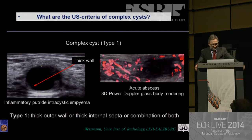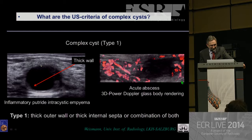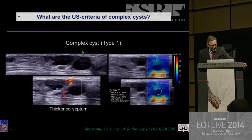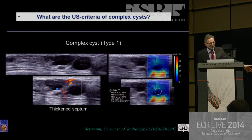A complex cyst Type 1: you see a thickened wall. In this situation, the arrow indicates the thickened wall — this is an inflammatory intracystic empyema, and you can also see hypervascularization surrounding this abscess. This is an acute abscess. Another example: a thickened septum with large fluid-filled areas. The thickened septum shows vascularization on color Doppler. This is complex, with a definitely higher probability of malignancy than 2%, placing you in BI-RADS 4.